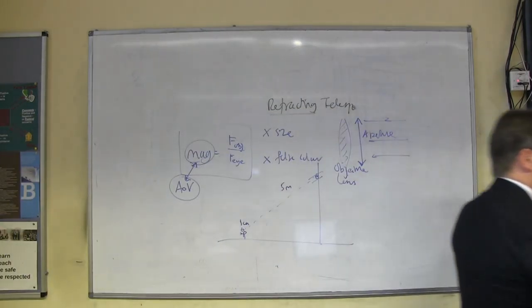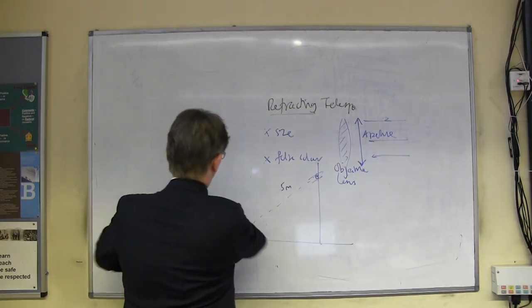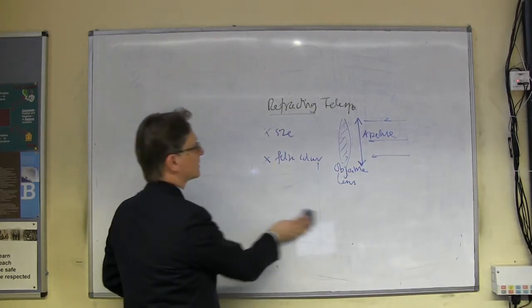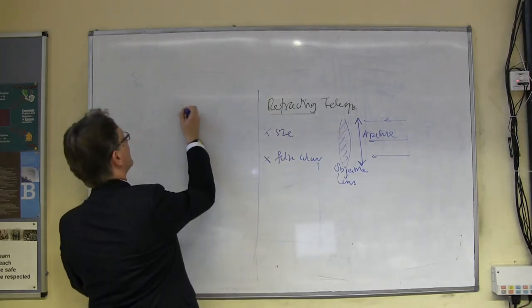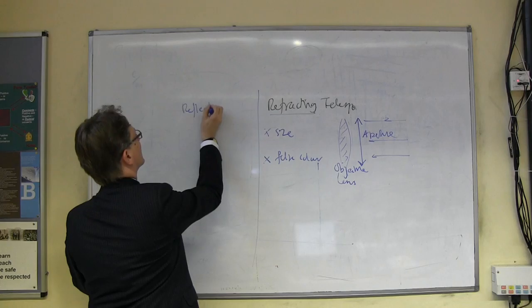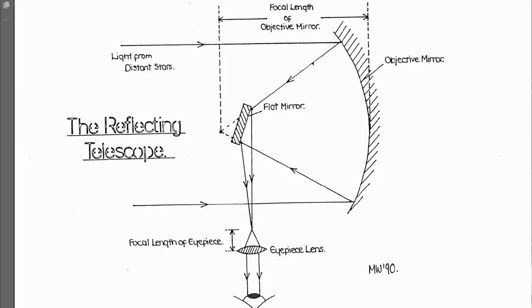Now, this is the second type of telescope you need to know about, and it works in a slightly different way. A lot of things are the same, you still have an objective, you still have an eyepiece, et cetera, but this type of telescope is called a reflecting telescope. It's called a reflecting telescope, because what's collecting the parallel light from the stars? Now, this looks a bit confusing on the diagram, because it's at the other end of the telescope.